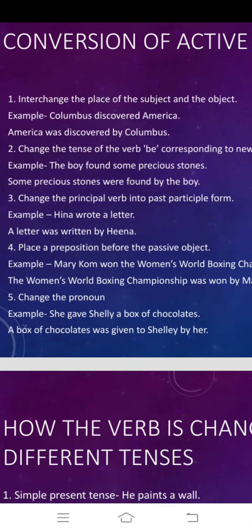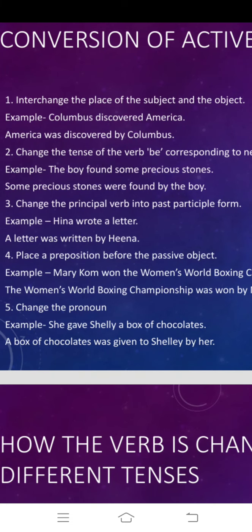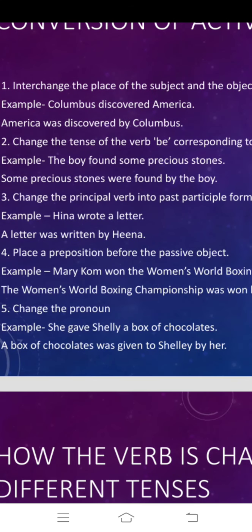Third rule: change the principal verb — meaning the main verb — into past participle form, which is the third form of the verb, or by adding 'ed'. For example, Hina wrote a letter. Here 'wrote' is the verb and the third form of 'wrote' is 'written'. So the answer is: a letter was written by Hina.